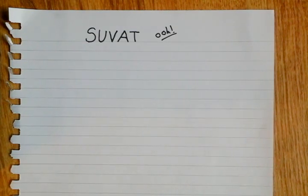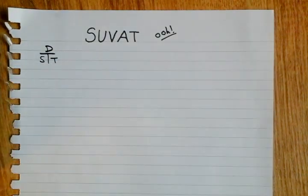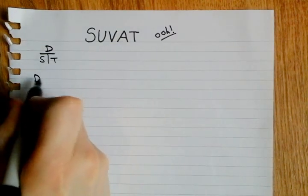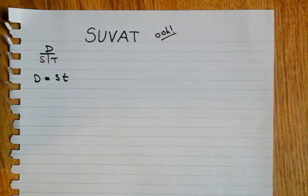First, we need to draw our STD triangle. It's STD, like that. Here, we can see that the distance is equal to the speed times the time. I just changed the time into lowercase.